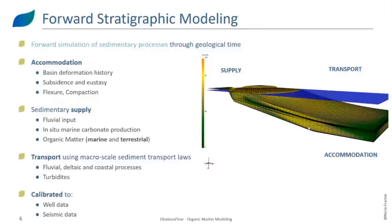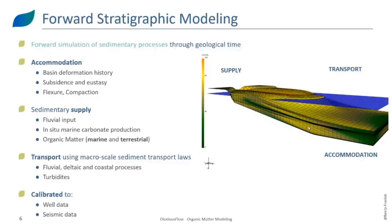As the name suggests, forward stratigraphic modeling is a forward approach used to simulate the filling of a sedimentary basin forward in time. We start at a certain point in time and move forward. At different time steps we specify parameters such as accommodation space — how much space there is to be filled with sediments. We then bring in sediments, which can include clastic sediments from rivers, in-situ carbonate sediments generated in different environments, and the third type — the focus of this presentation — marine and terrestrial organic matter.